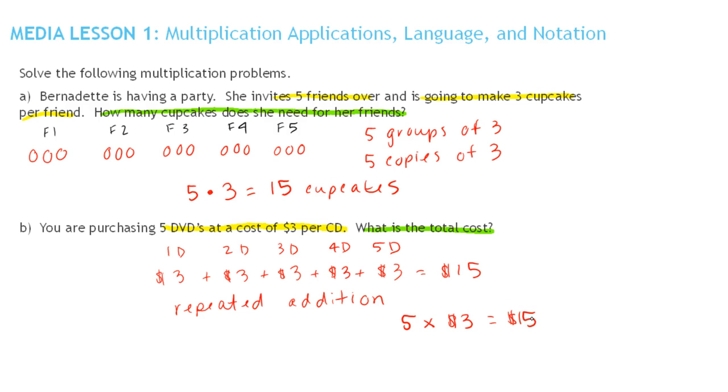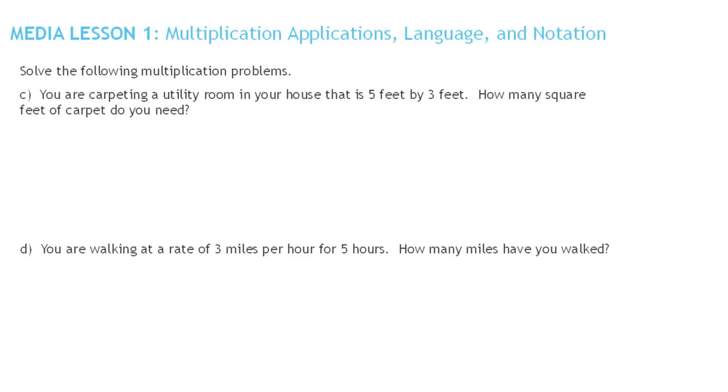Let's look at two more ways to think of multiplication. You are carpeting a utility room in your house that is five feet by three feet and here's the question how many square feet of carpet do you need. So let's draw a picture of this. So I'm going to draw a rectangle and your utility room is three feet in one direction and five feet in another and we're assuming this is a rectangle, most houses have straight walls, it wouldn't be a heart-shaped utility room probably. Now we want to fill this up with carpet.